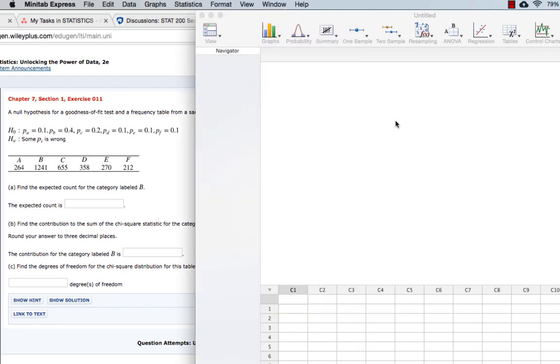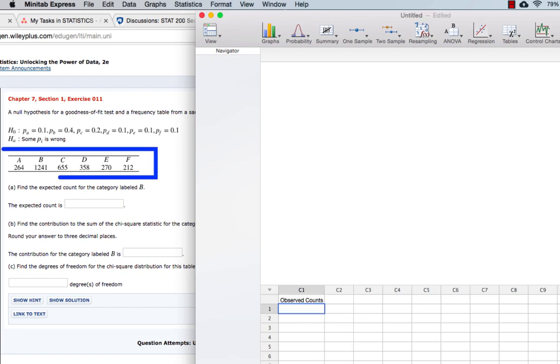Here in Minitab Express, in a column I'm going to enter our observed counts. We have 264, 1241, 655, 358, 270, and 212.